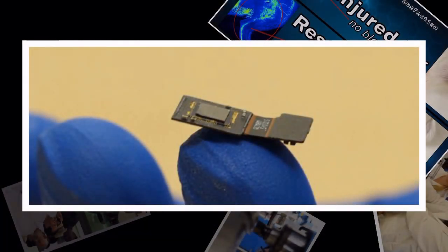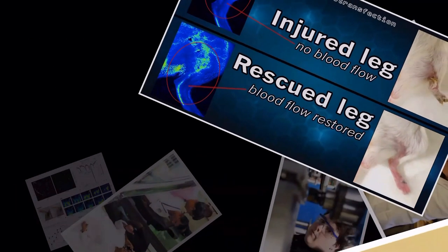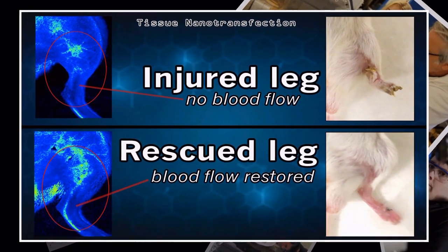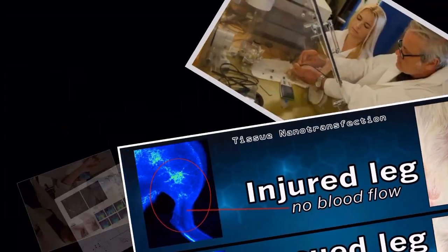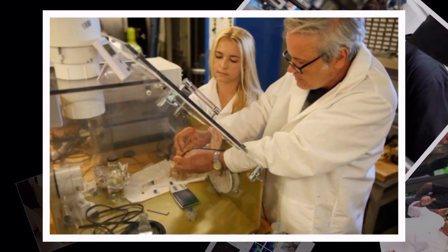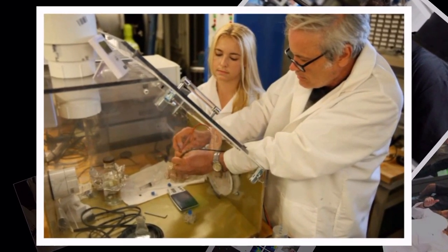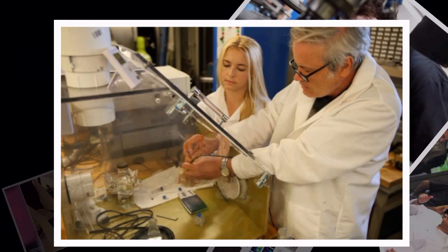Scientists at Ohio State University have developed a new method that has the capability of changing the body's existing cells into new cells to promote healing. The method, called tissue nanotransfection, or TNT, reprograms cells through a device that uses nanotechnology.